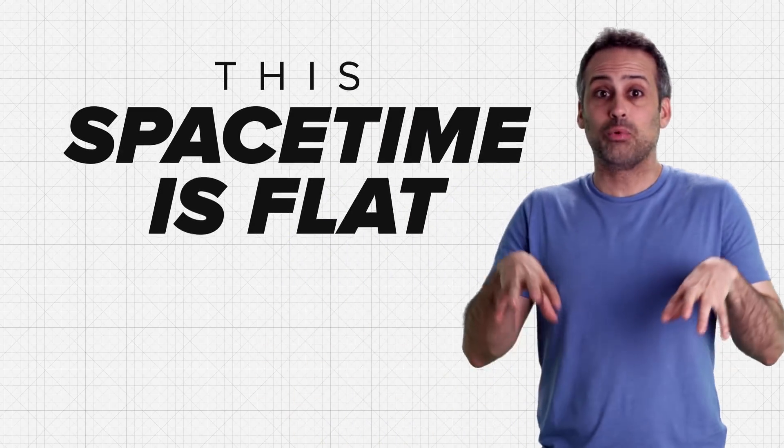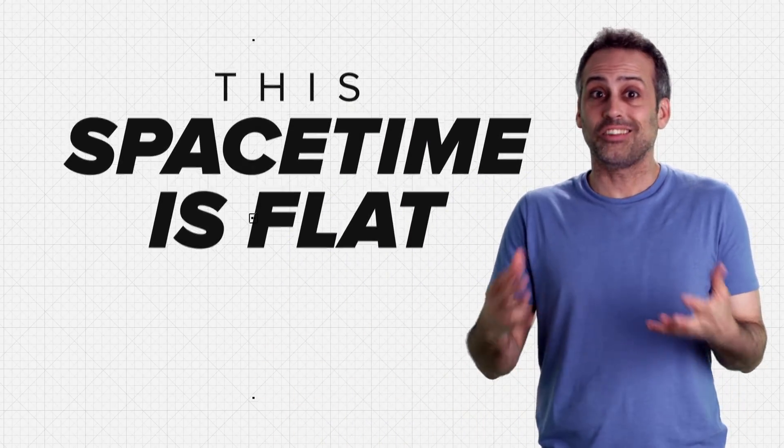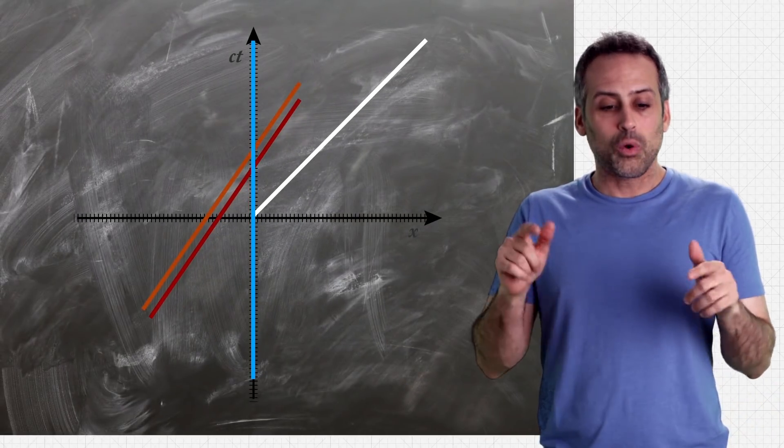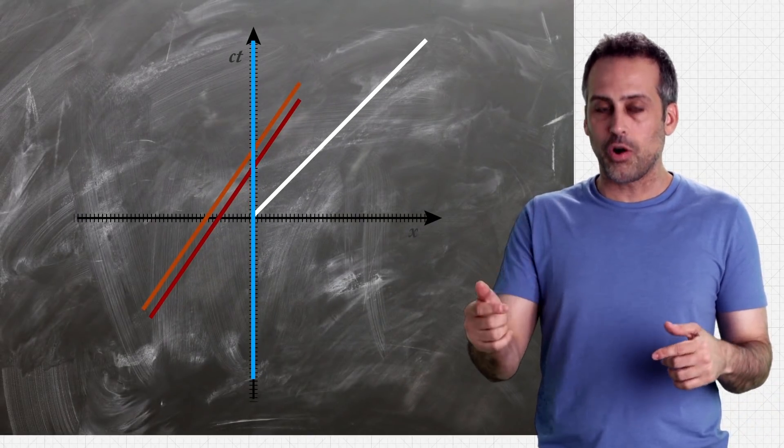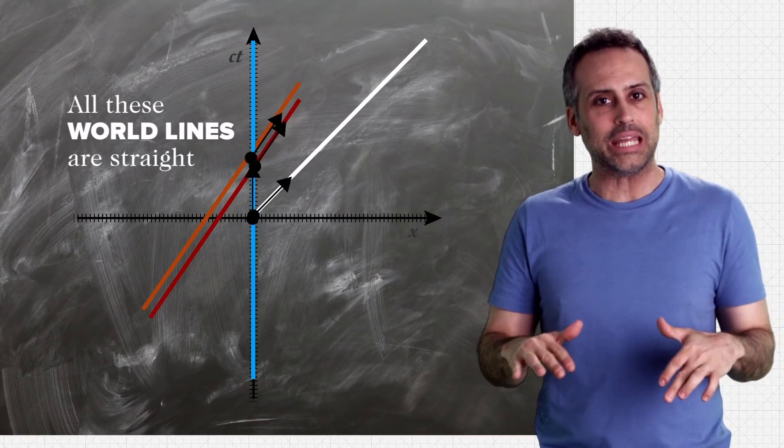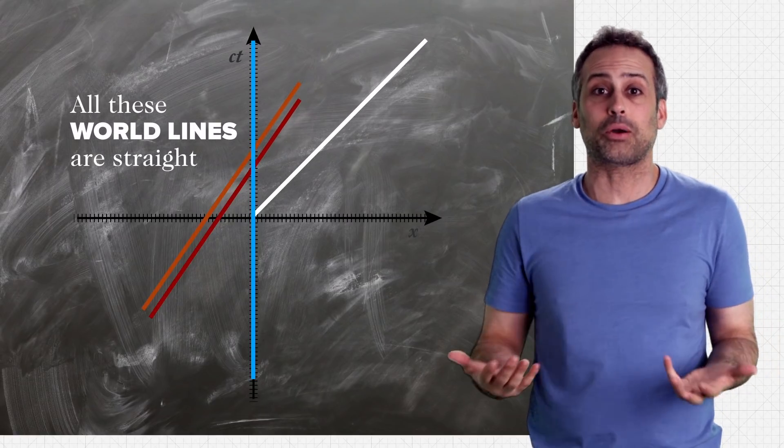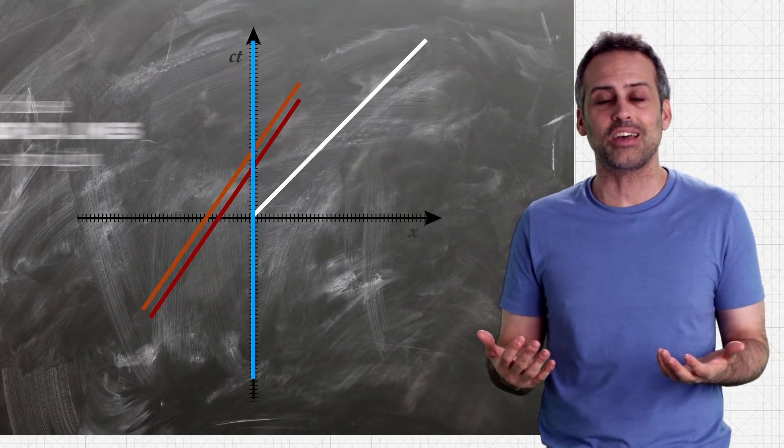For starters, this spacetime really is flat. Parallel lines stay parallel. Second, the world lines of the red guy, the monkey, the photon, and me are all straight. All of their tangent vectors remain tangent when parallel transported. So all of them are geodesics.